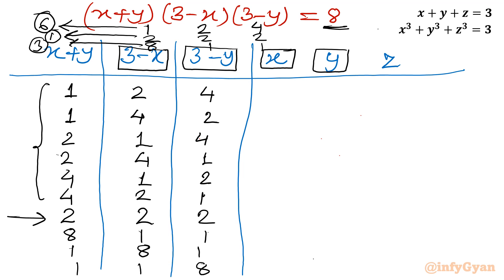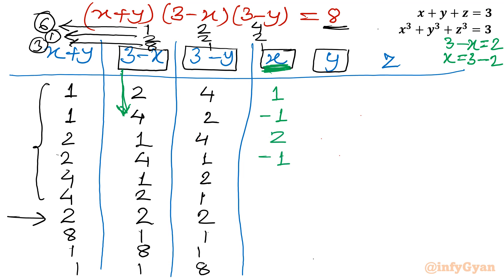To find x, I take 3 minus the value in the 3-x column for each row: 3-2=1, 3-4=-1, 3-1=2, 3-4=-1, 3-1=2, 3-2=1, 3-2=1, 3-2=1, 3-1=2, 3-8=-5, 3-1=2. Similarly, I compute y values from the 3-y column.